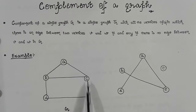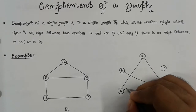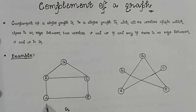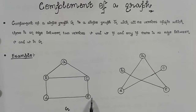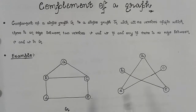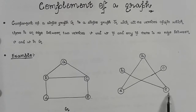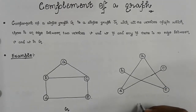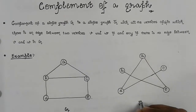Similarly, we identify the remaining missing edges for all vertices. Vertex E is connected to D and C in G, so in our complemented graph we connect E with B and A. After identifying all the edges present in G and adding the missing ones, this is our complemented graph G-bar.